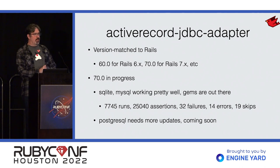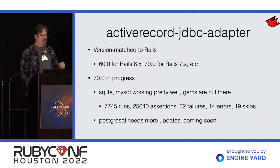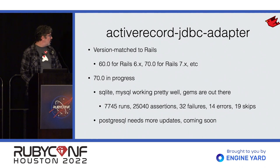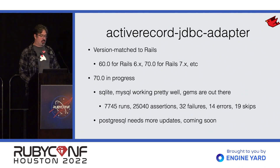Our Active Record adapter is called the Active Record JDBC Adapter. We do version matching — so Rails 6.x is supported by our 60.0 Active Record JDBC Adapter, and Rails 7 will be 70.0. The SQLite and MySQL 70.0 adapters were released this morning, so you should be able to generate an application and get up and running pretty quickly. Postgres needs a little more work. The SQLite test results are looking pretty good.